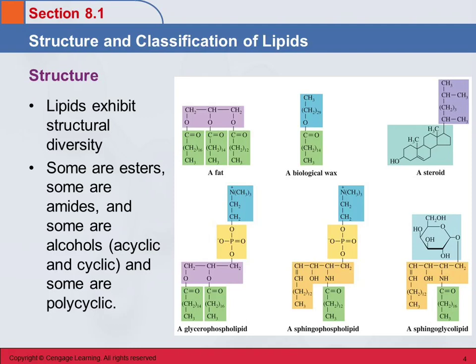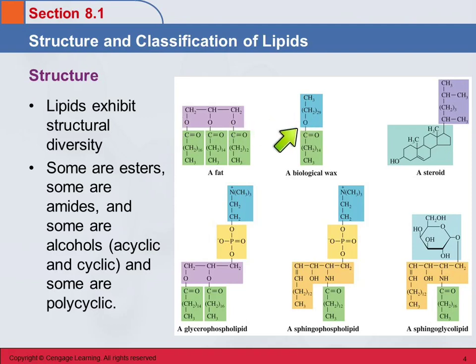There is a great deal of structural diversity in lipids, and this diagram gives us an overview of this. Some of these are esters — do you recognize the ester group in here? There's an ester group here. Some of these are amides — here's one over here, there's an amide group. Some of them are alcohols, and here's a saccharide that's got an alcohol group on it.